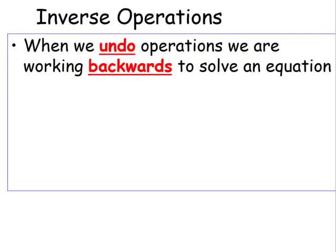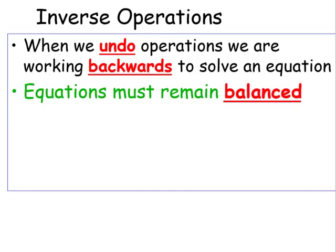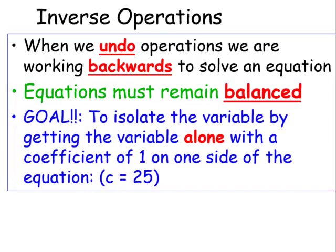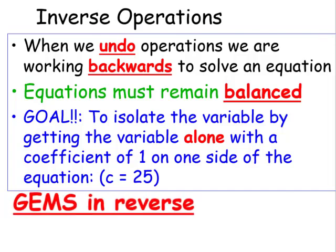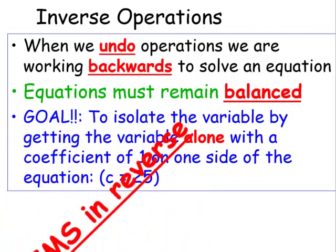Inverse operations. When we undo an operation, we are working backwards to solve the equation. Equations must remain balanced. The goal is to isolate the variable by getting the variable alone with a coefficient of one on one side of the equation, such as c equals 25. This is like GEMS in reverse. Reverse, reverse.